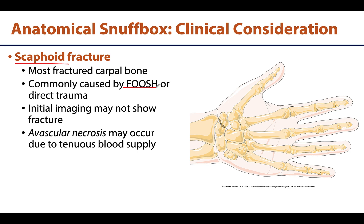The fracture most commonly occurs at the narrowest portion of the bone. Importantly, it's often not picked up on initial imaging right after the injury and can be misdiagnosed as a severely sprained wrist. However, imaging done 10 to 14 days after the injury typically reveals the fracture, because bone resorption occurs due to avascular necrosis.